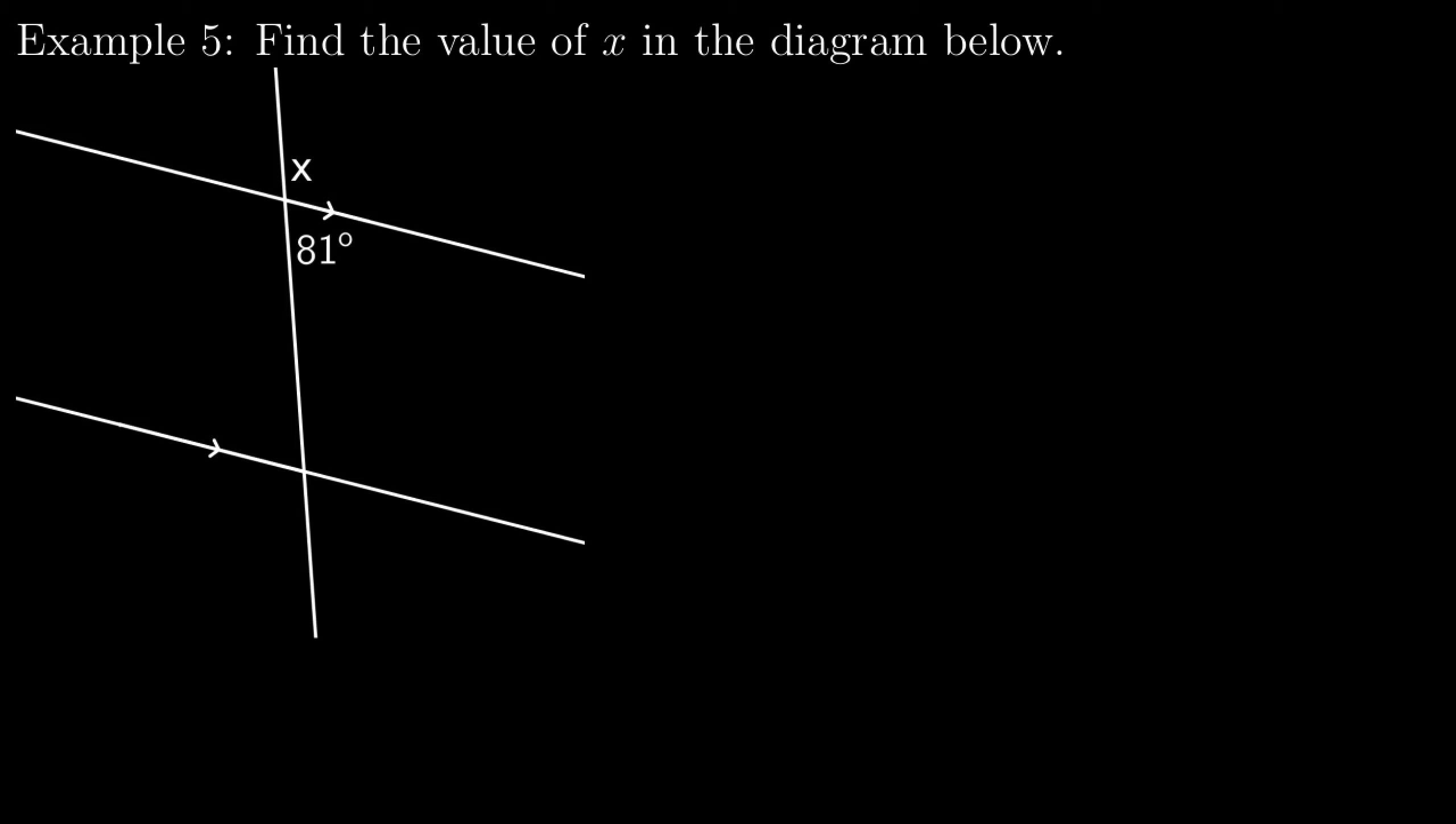Okay, so in this one we want to find the value of x in the diagram below. I see x, I see 81 degrees. Like with two problems ago, I don't use this at all. So this is one of our previous angle pairs. I see x looks obtuse, whereas 81 degrees is definitely acute, so that lets me know I should follow this: x plus 81 equals 180. I'll subtract 81 from both sides, and that will give me x is equal to 99 degrees.